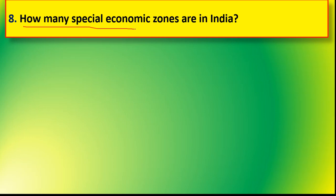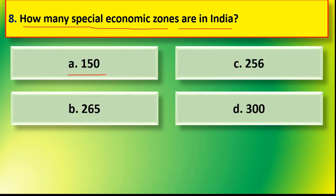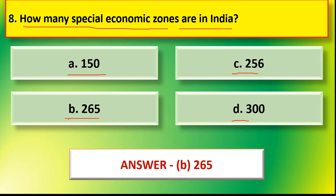Next question: how many special economic zones are in India? Options are option A 150, option B 265, option C 256, or option D 300. The correct answer is option B — 265 special economic zones are in India.